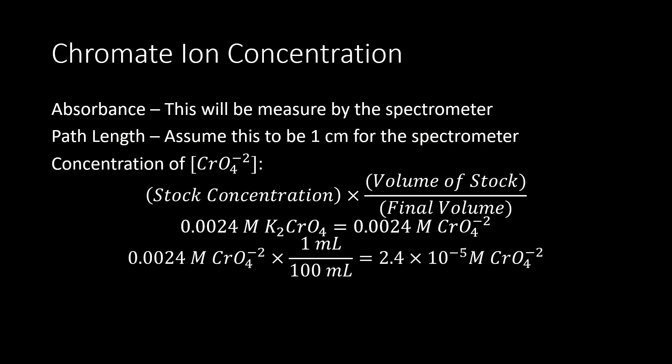Some parameters we'll be looking at include absorbance, path length, and concentration. Absorbance is measured directly by the spectrophotometer — if it's currently in percent transmittance, just change it to absorbance. For the path length, the specific spectrometer we're using has a path length of one centimeter, so just plug one centimeter into the path length. For concentration, we'll have our concentration being the chromate anion.